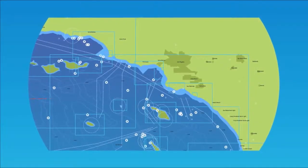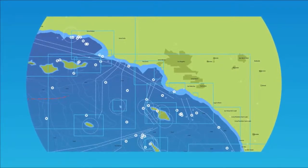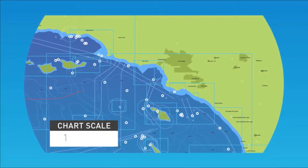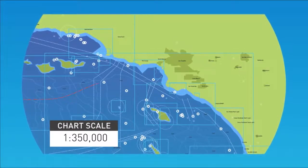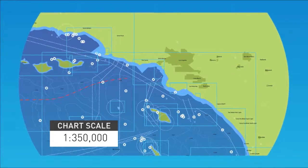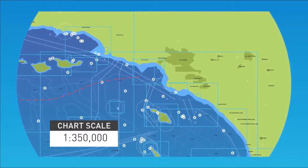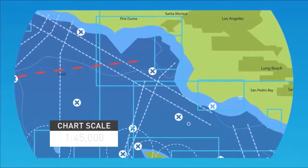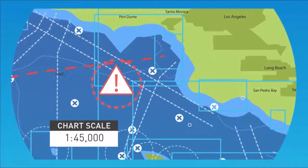As with paper charts, it is vital that the navigator choose the correct chart scale for the task at hand. Navigating coastal waters with ECDIS set to a scale for oceanic transit can be extremely dangerous, as some navigational hazards may not be visible.